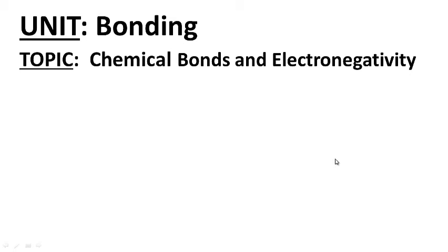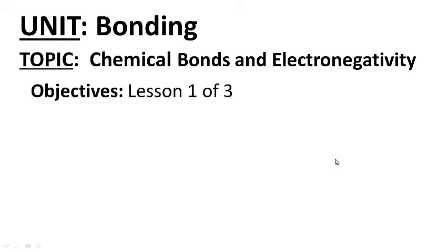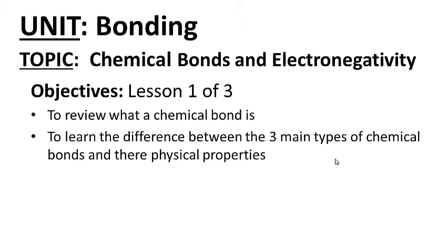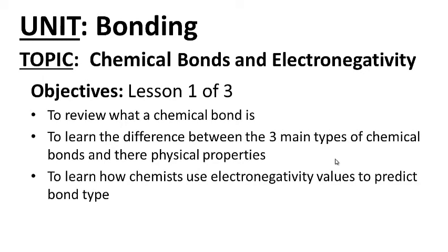Welcome to our unit on bonding. Today's topic is chemical bonds and electronegativity. Lesson 1 of 3. Your objectives are as follows: to review what a chemical bond is, to learn the difference between the three main types of chemical bonds and their physical properties, and to learn how chemists use electronegativity values to predict bond type.